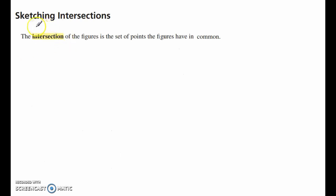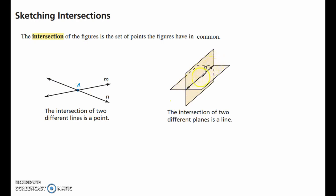Alright, and finally you get to do a little bit of sketching. The intersection of figures is the set of points that the figures have in common. So, when things cross an intersection, for example an intersection of lines, they have one point in common. That's the intersection. So when two lines intersect, the intersection is a point. When two planes intersect, the intersection is a line. So they have all the points on that line in common.